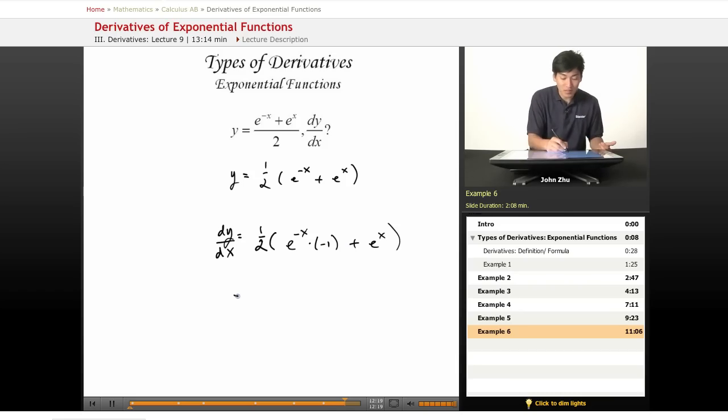Then we simplify this a little bit, get rid of some parentheses, 1 half times negative e to the negative x plus e to the x.